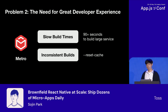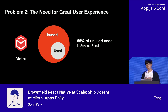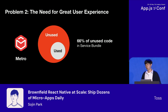Even with bundle splitting, we had more problems. Build times were still over 90 seconds for large services — we needed much faster builds. We always had to use the reset cache option because of inconsistent Metro builds. And after inspecting the service bundles Metro built, we found that Metro didn't have tree shaking, meaning around 66% of a service bundle was unused code.